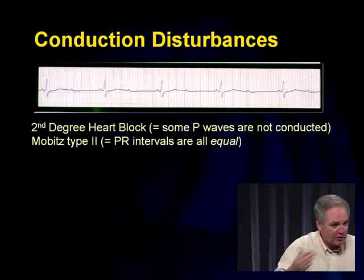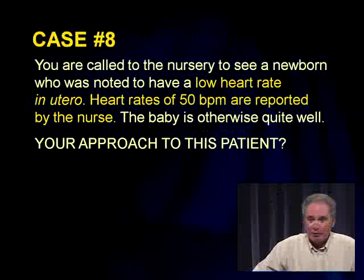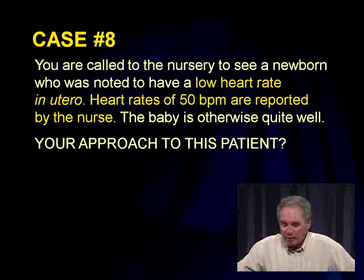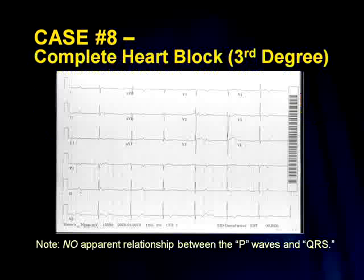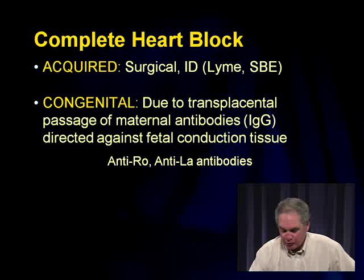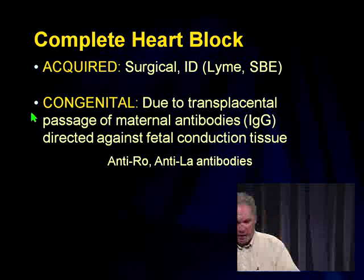Second degree block type 2: some P waves don't have QRS complexes after them, but the PR interval remains constant — unlike Wenckebach. Some of these children are symptomatic and may need intervention. Third degree — complete heart block: complete dissociation between P waves and QRS complexes. Congenital heart block presents as a newborn with heart rate of 55. It is caused by transplacental passage of maternal IgG antibodies — anti-Ro and anti-La — attacking the fetal conduction system. Mothers often have underlying connective tissue disease, sometimes asymptomatic.